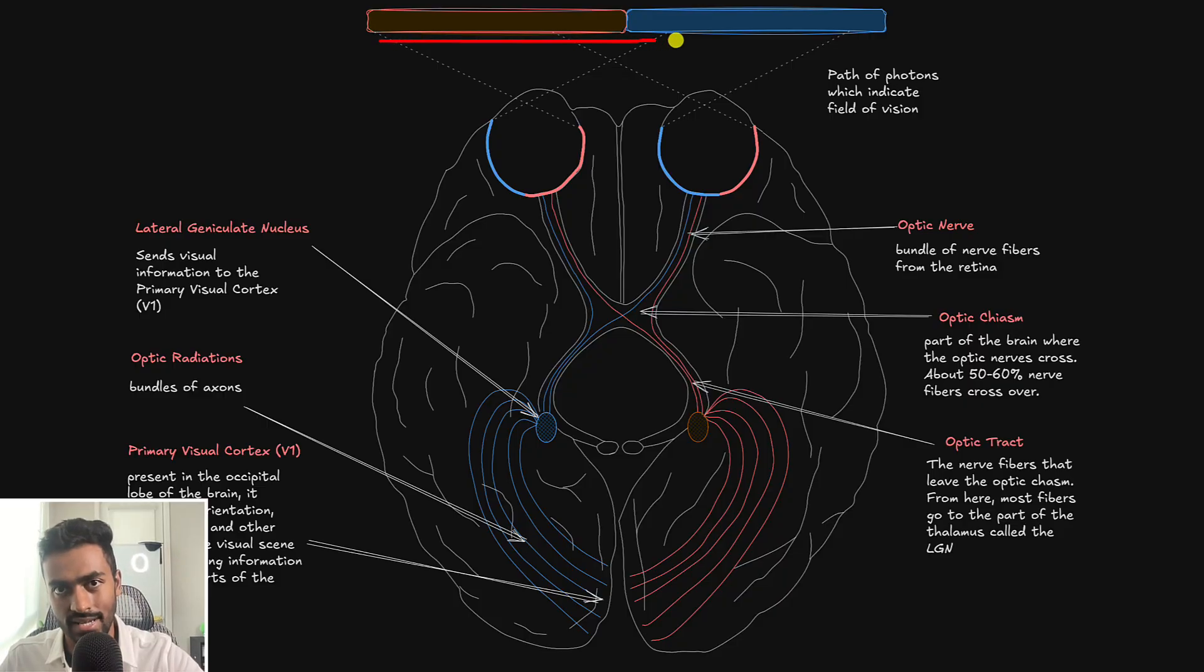So currently, the person is processing a visual scene, these gray lines are the path of photons. So you can see that this structure over here is how the image is seen on the retina or is projected on the retina. And it's going to be inverted in both cases, as you can see here.